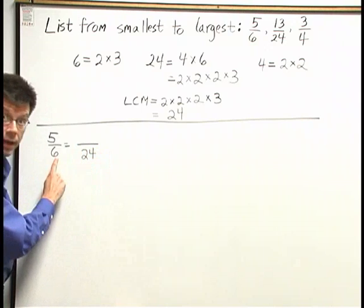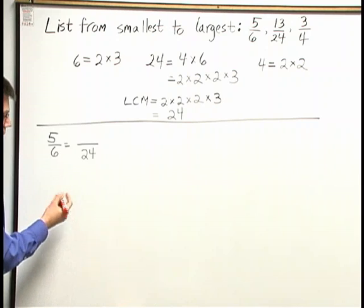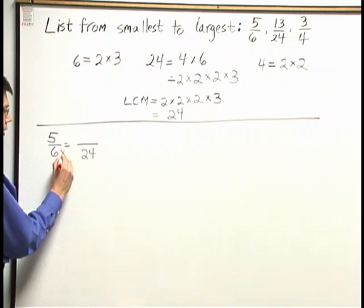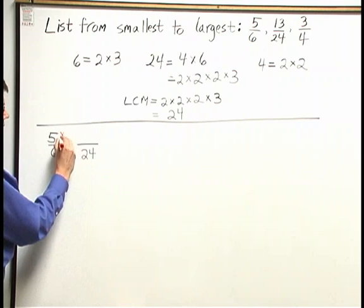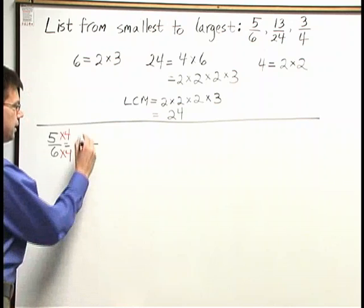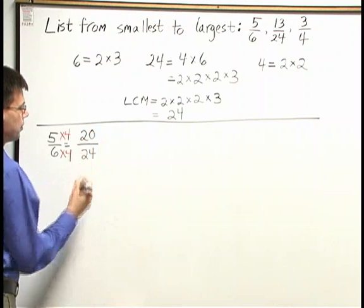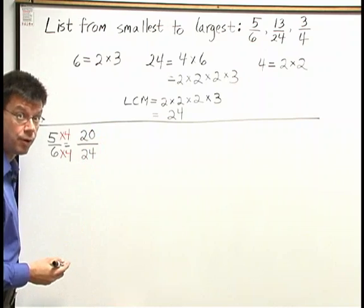What do I multiply 6 by to get 24? I need to multiply 6 by 4 to get 24. So up above, I'll also multiply 5 by 4 to get 20. So 5 sixths can be written as 20 24ths.